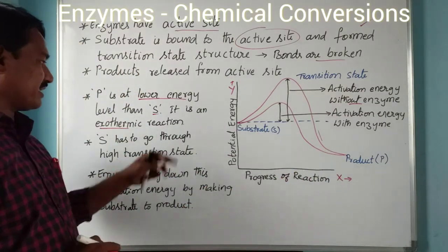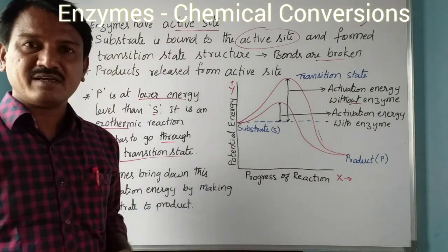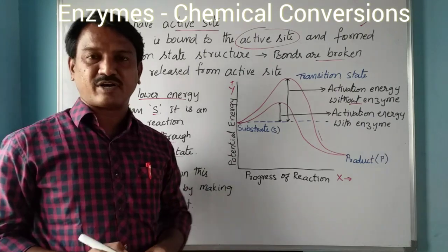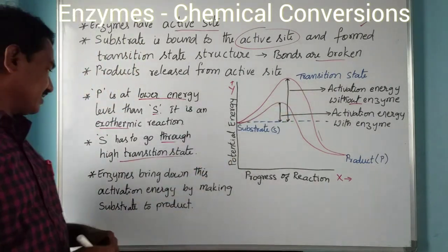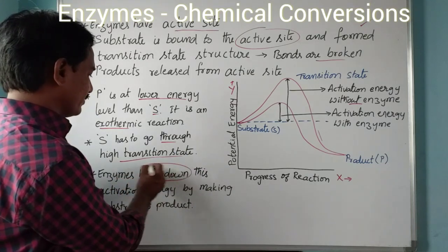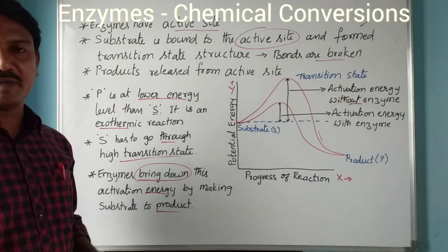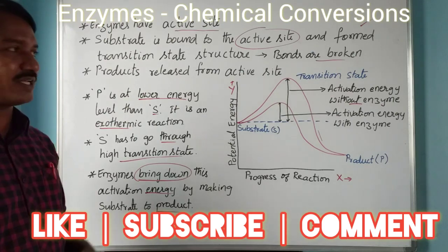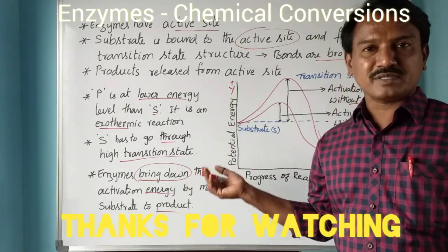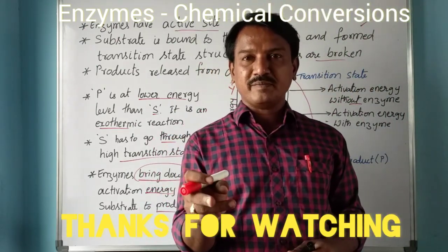The substrate must pass through a high transition state where bonds are cleaved and new bonds form to produce products. Enzymes bring down this activation energy by converting substrates into products. This is how enzymes speed up chemical reactions.